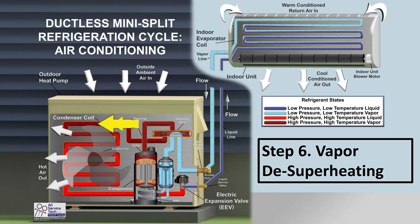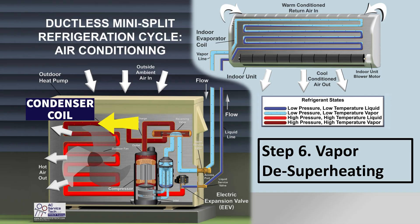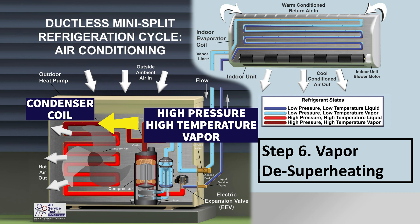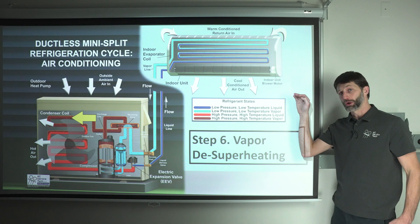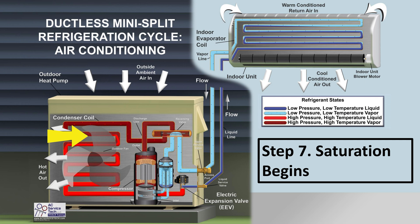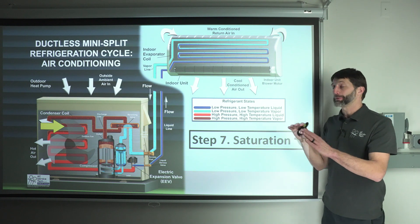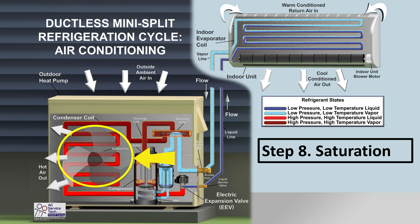The next step is the vapor is now de-superheating — meaning the vapor refrigerant is lowering in temperature — as it enters the condenser coil, which is the outdoor coil during air conditioning mode. The high pressure, high temperature discharge gas travels into the condenser coil and lowers in temperature, de-superheating until it enters saturation. The vapor refrigerant lowers in temperature so much that it becomes saturated, where liquid and vapor both exist at the same time, and at that point its temperature stabilizes. As the saturated refrigerant travels through the condenser coil in step eight, the refrigerant is no longer changing in temperature.